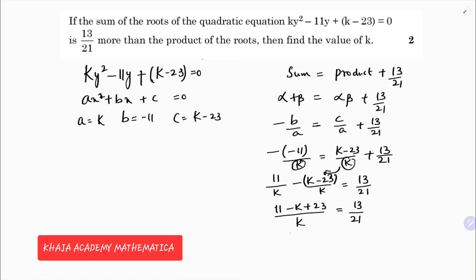So now here 11 plus 23, which is 34, 34 - k by k equals 13/21. See if we simplify further I will do cross multiplication. Here I will cross multiply 21 times 34 - k equals 13k.